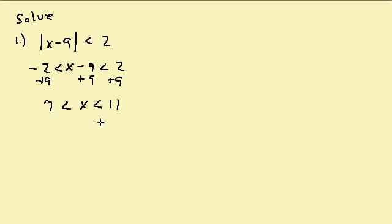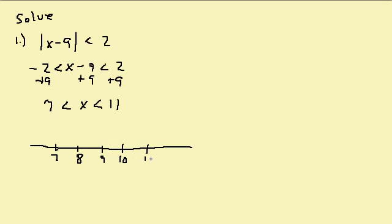If we graph this, we have 7, 8, 9, 10, 11. We have an open circle on the 7 and an open circle on the 11. Then we write our answer in interval notation, which is going to be from 7 to 11 — written as the open interval (7, 11).